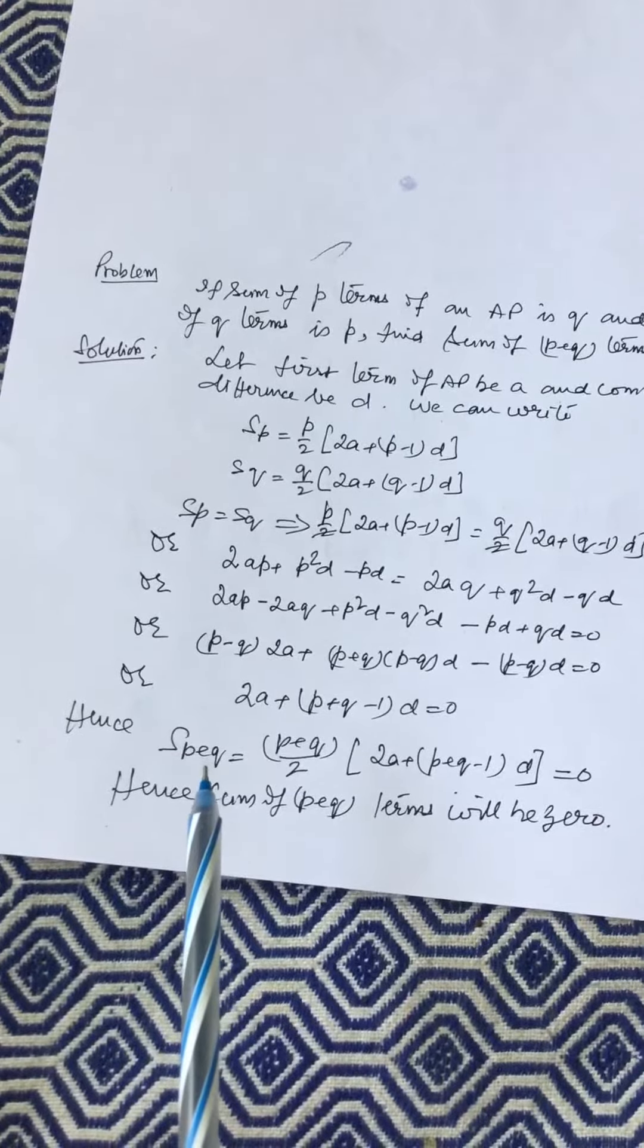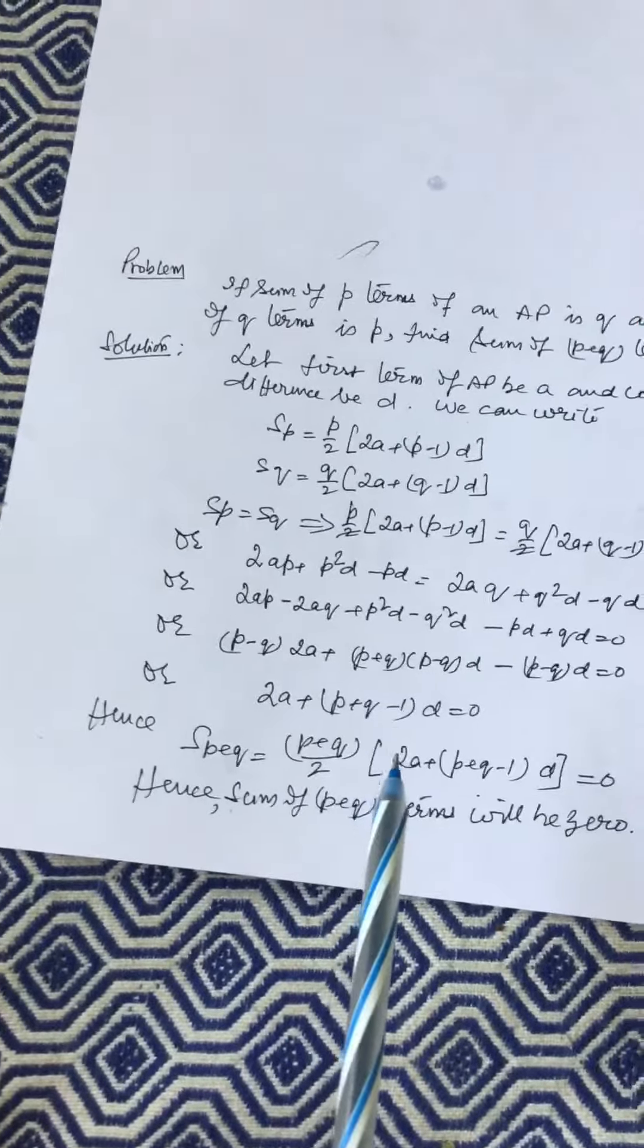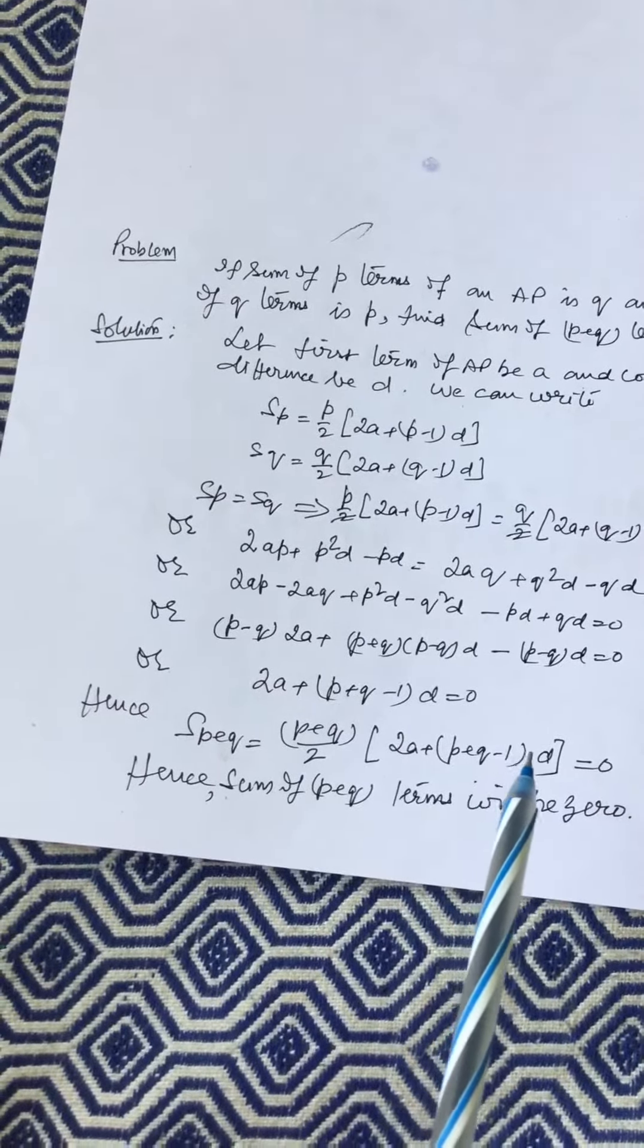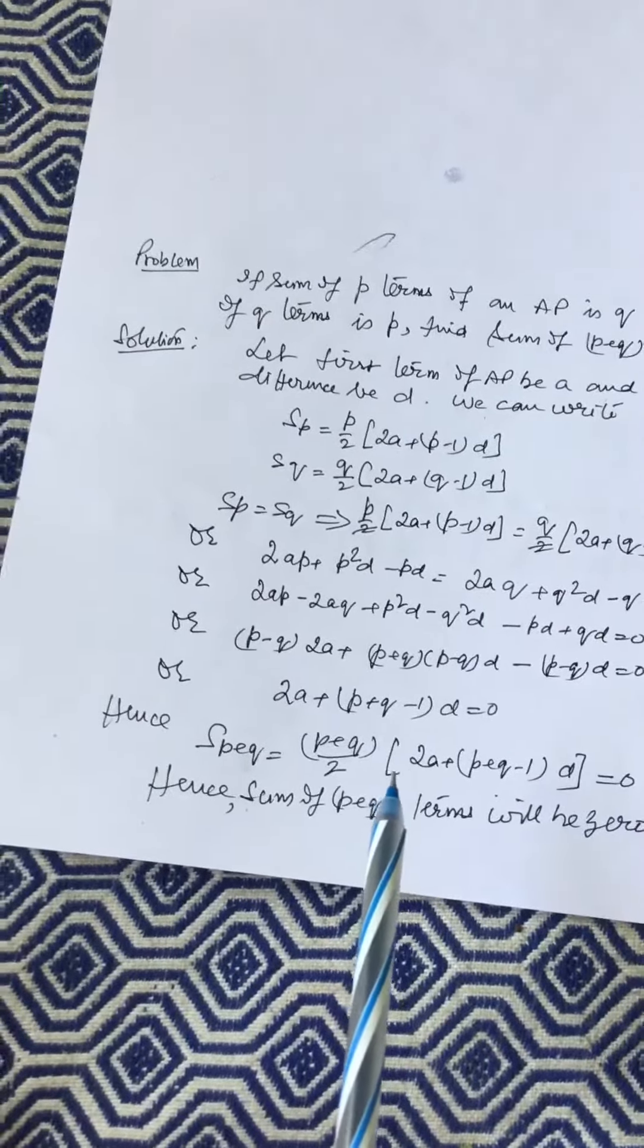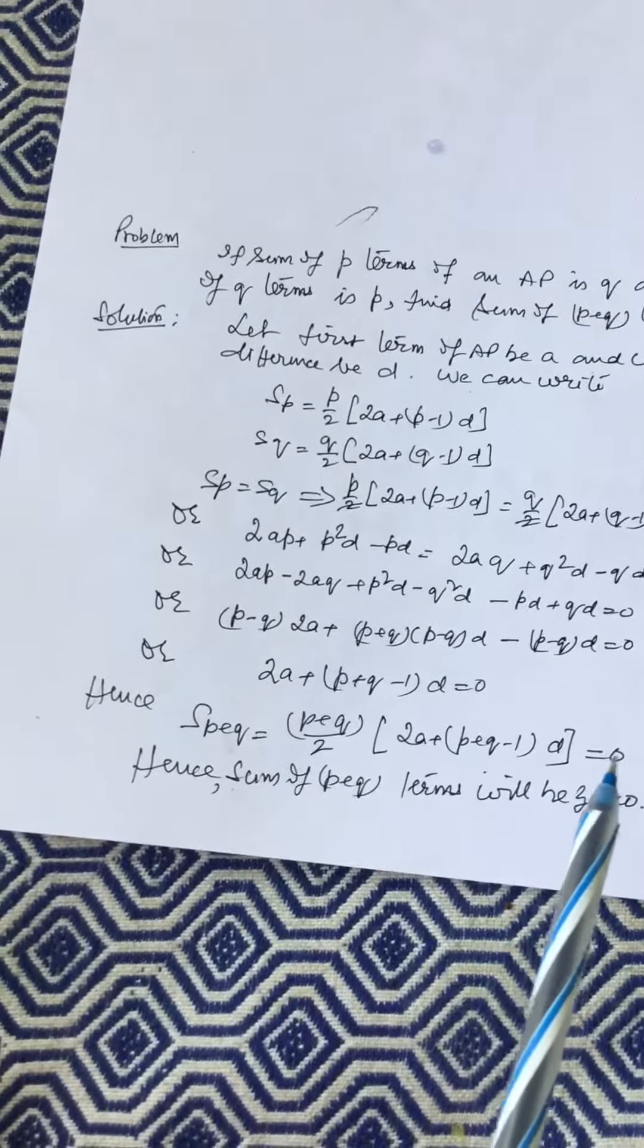Hence sum of P+Q terms will be given by (P+Q)/2[2A + (P+Q-1)D]. As this term inside bracket is 0 as proved above, you will get sum of P+Q terms as 0.